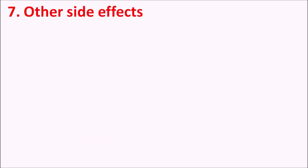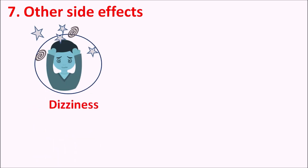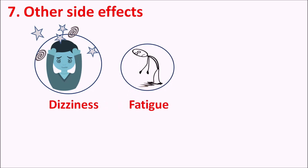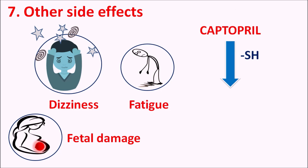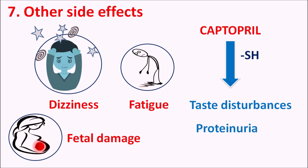Other side effects of ACE inhibitors include effects on the central nervous system, such as dizziness, headache, and fatigue. These drugs are also teratogenic in nature and can produce fetal damage. Among these drugs, captopril is a designer drug containing a thiol group within its structure. Because of this thiol group, captopril can produce additional side effects such as taste disturbances and proteinuria, which are specific to captopril and not shared by other ACE inhibitors.